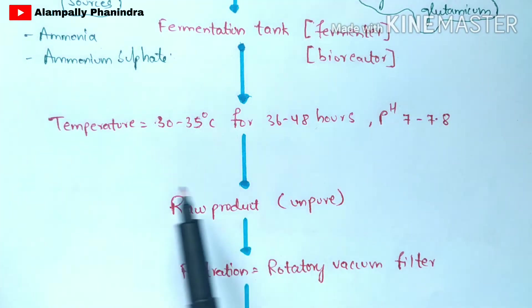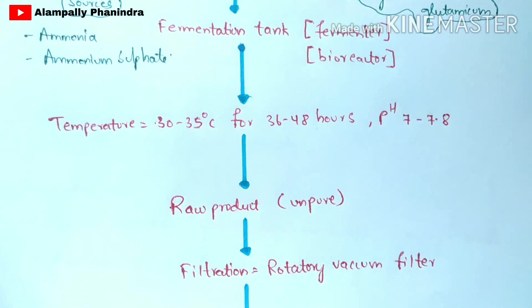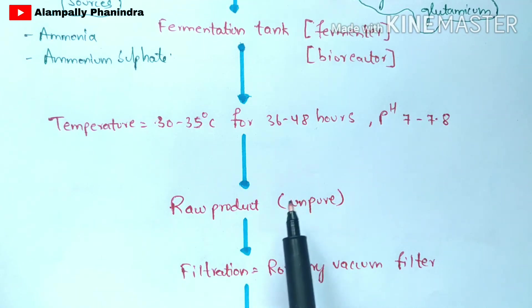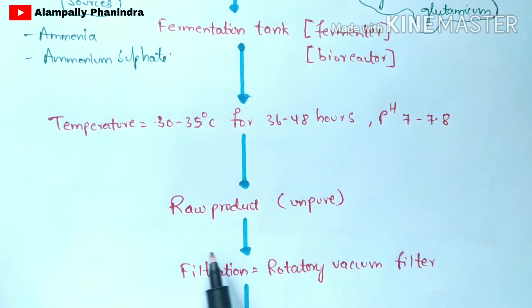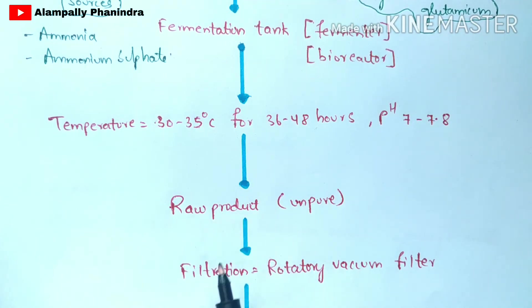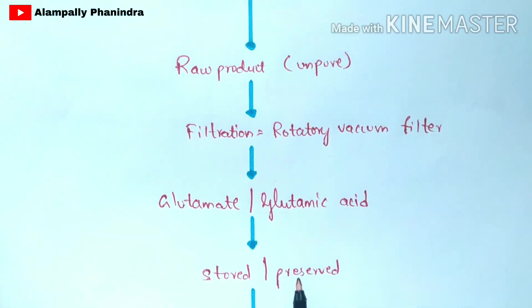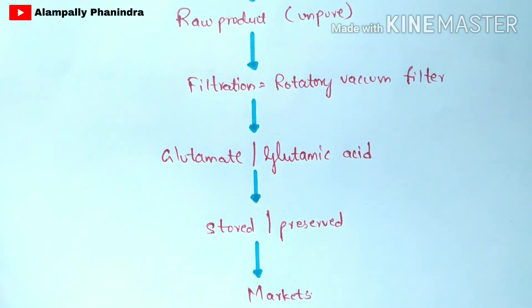After 36 to 48 hours, the raw product is obtained from the fermentation tank through the outlet. This raw product is in impure form, so it undergoes filtration using a rotary vacuum filter. The pure form of glutamic acid is then produced, stored, preserved, and supplied to markets.